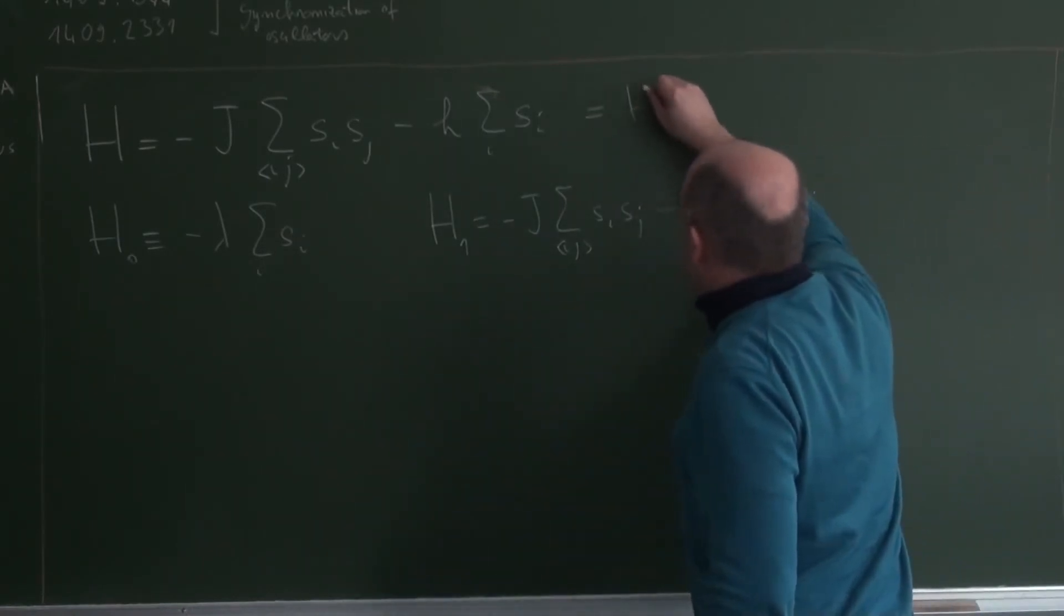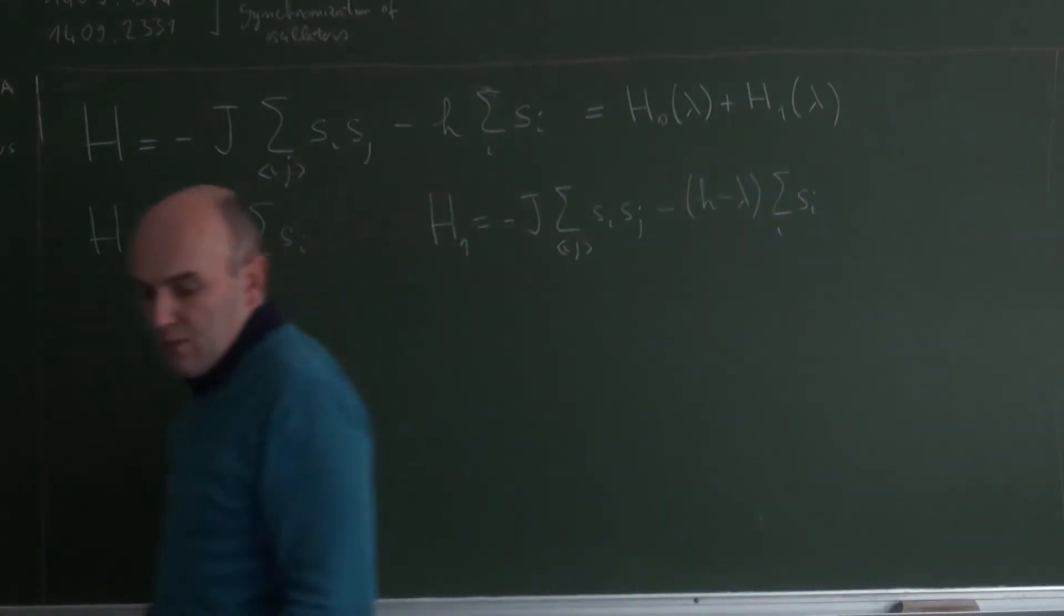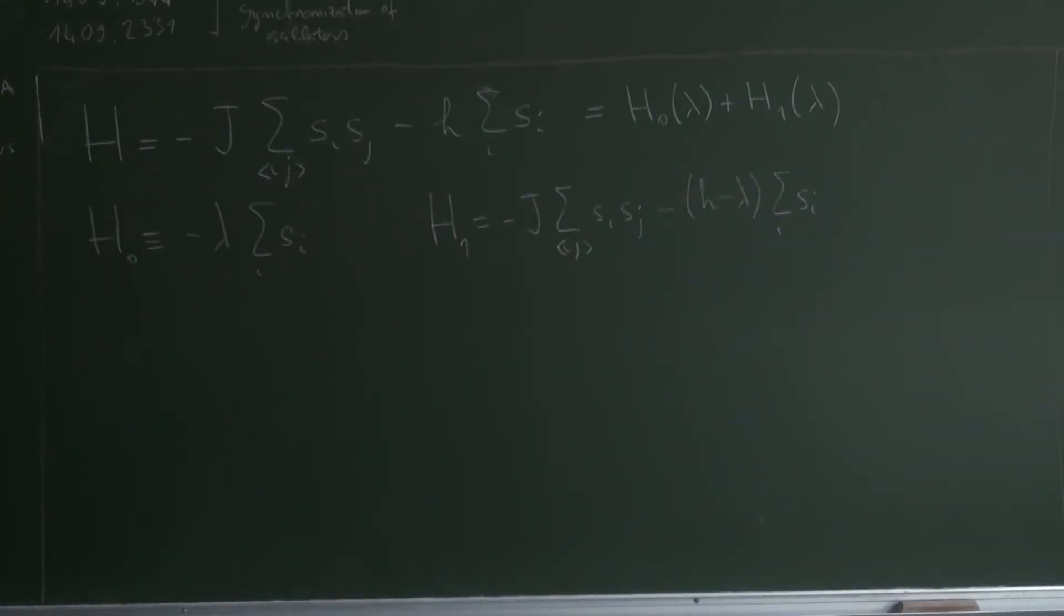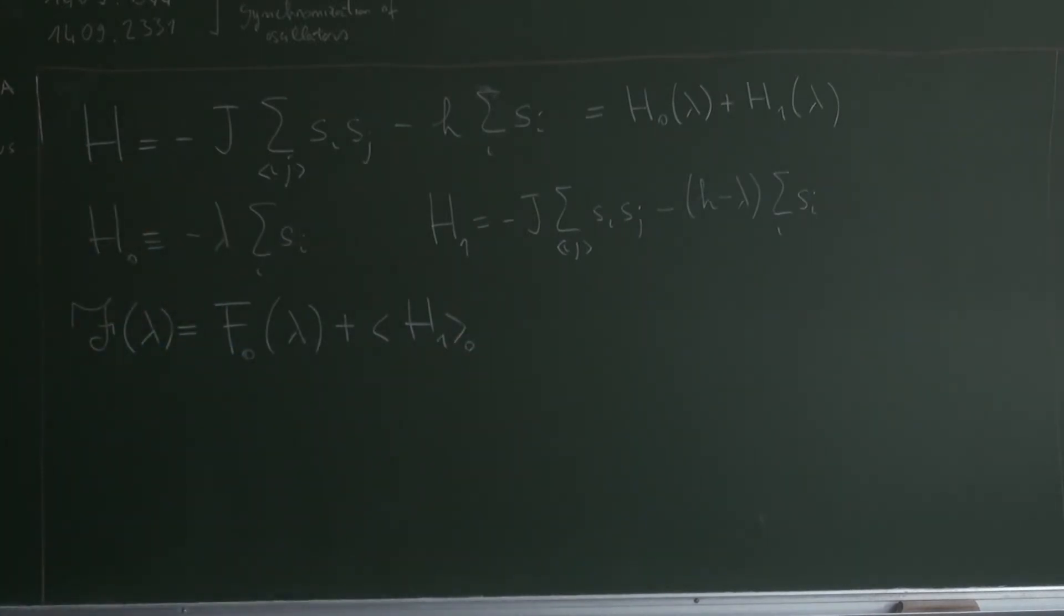So we write this one as H0 of lambda plus H1 of lambda. So what is the Bogoliubov inequality telling us? We can define now a variational free energy F of lambda as the F0 of lambda plus H1 of lambda. The Bogoliubov inequality tells us that the best approximate of the free energy we can obtain by minimizing this F with respect of lambda. Of these two terms, one is the easy one, the F0 is the free energy of this system.